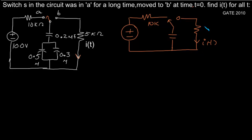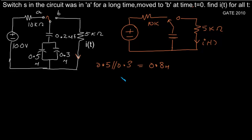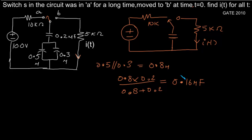We can put an equivalent capacitance and we have the switch. Now what is the value of this capacitance? We have 0.5 and 0.3 in parallel — these are capacitances — so the equivalent capacitance will be 0.8 microfarad. Now that in series with 0.2, so equivalent capacitance will be 0.8 times 0.2 divided by 0.8 plus 0.2, that will be 0.16 microfarads.